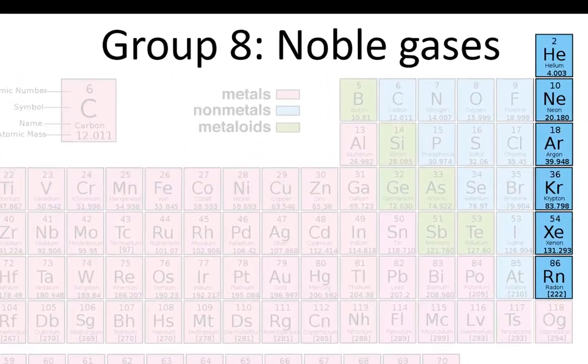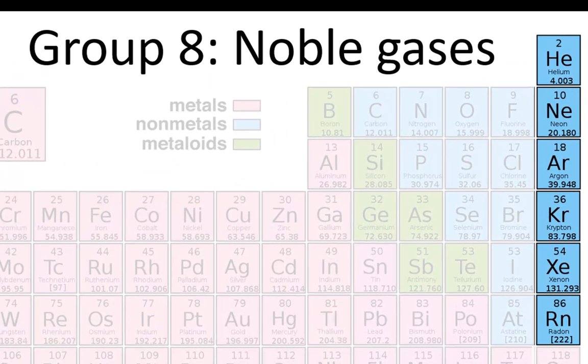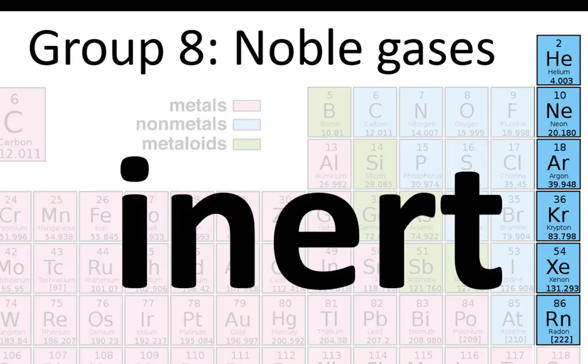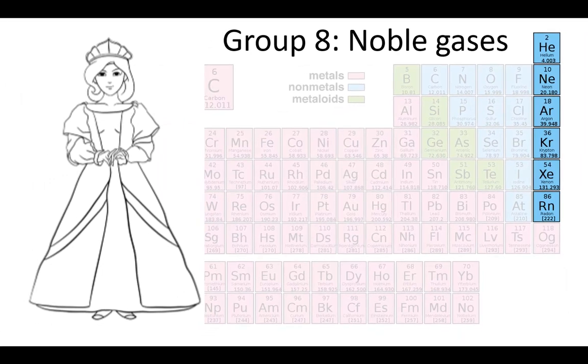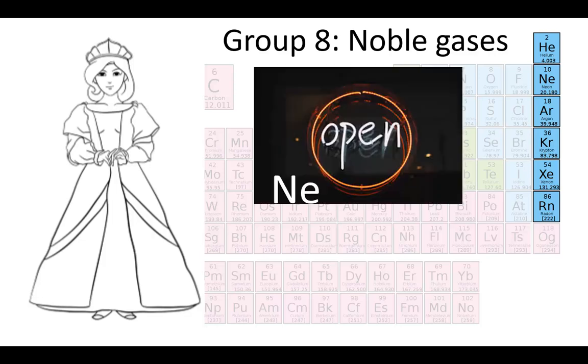Now let's go to the far right, Group 8: helium, neon, argon, krypton, xenon, radon. Those are the noble gases. They're called noble because they're inert. They don't react. Like the noble people in the olden days, who were too dignified to show emotion, these elements don't react. They're called noble gases because they're gases at room temperature.